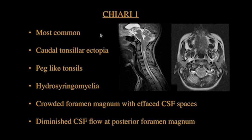Chiari 1 is the most common type out of all Chiari malformations. 50% of cases are asymptomatic. The characteristic feature is tonsillar herniation with peg-like tonsils lying at least more than 5 mm below the foramen magnum line or McRae's line.